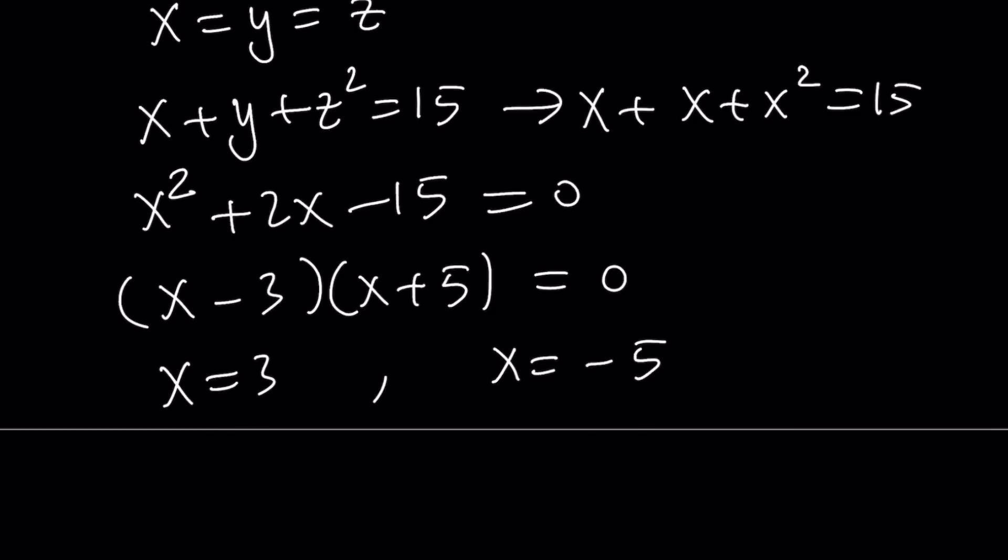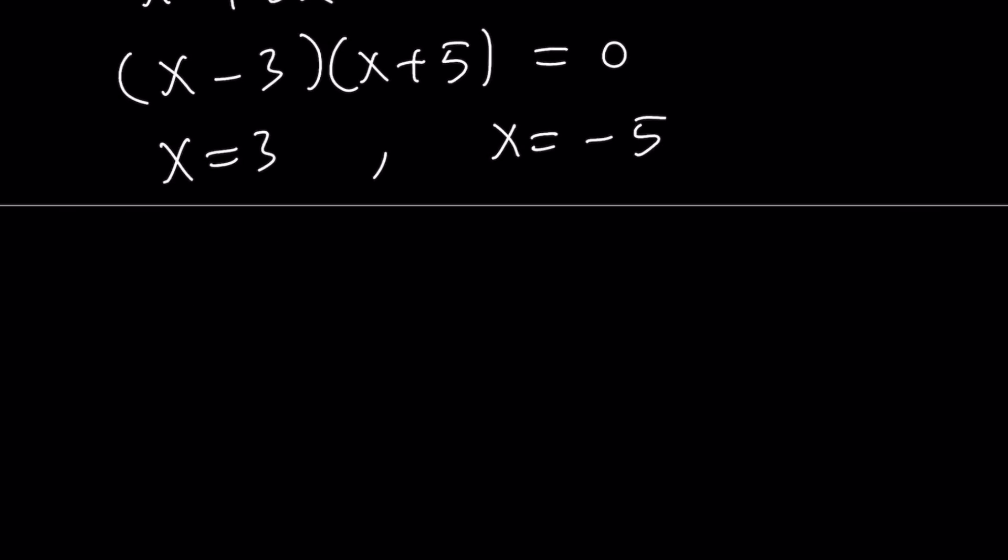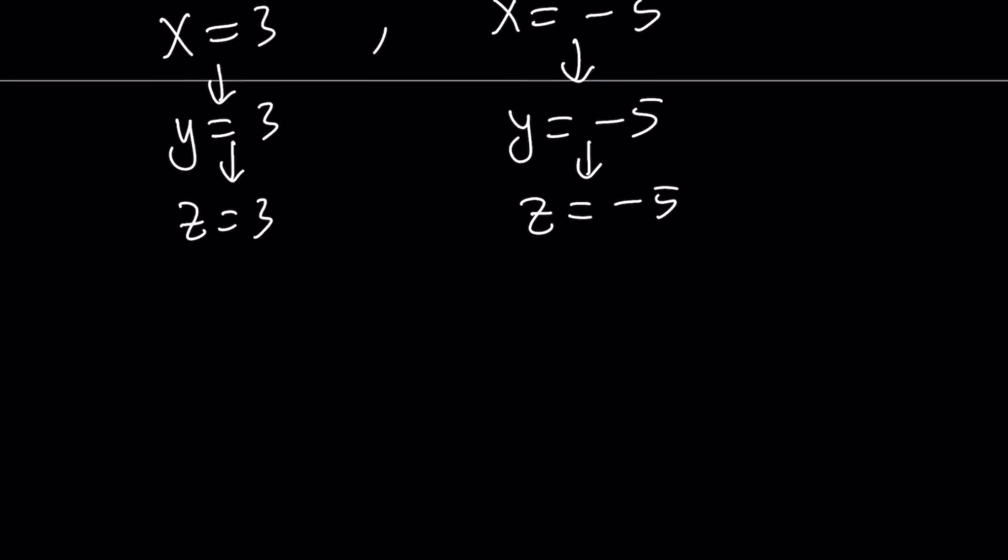But x equals y equals z in this case. If x is equal to 3, then y is equal to 3 and z is equal to 3. And from here y is equal to negative 5 and z is equal to negative 5. So we get two ordered triples from here: (3, 3, 3) and (-5, -5, -5). This is the case when they're all equal. Very easy to solve because they're all equal, fairly easy.